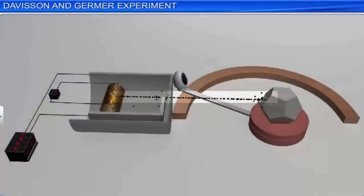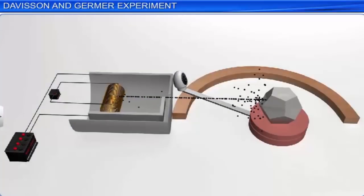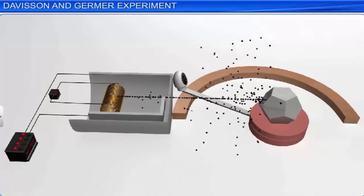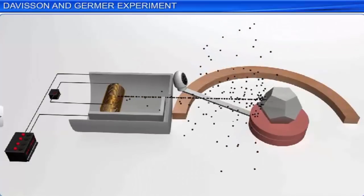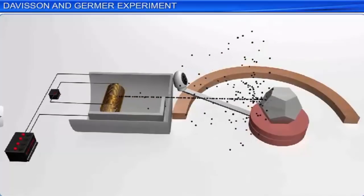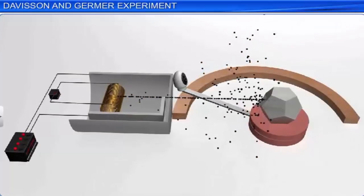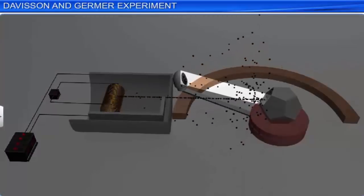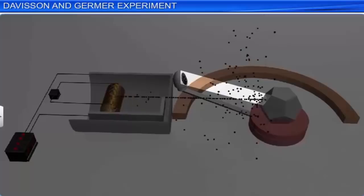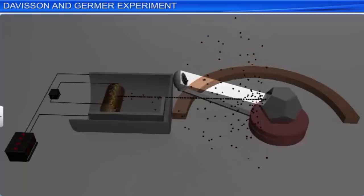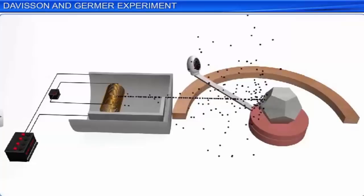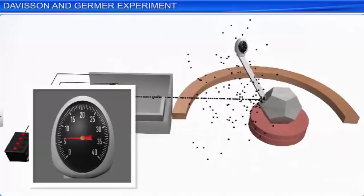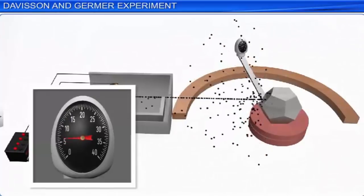The electrons thus emitted are passed through a cylinder with a pinhole along its axis, producing a fine collimated beam. This collimated beam is directed to fall on the surface of the nickel crystal. The electrons are scattered in various directions by the atoms of the crystal. The intensity of the electron beam scattered in a given direction is measured by the electron detector, or the movable collector.